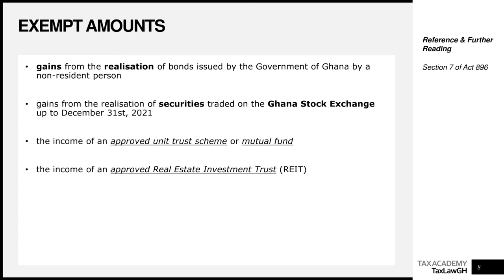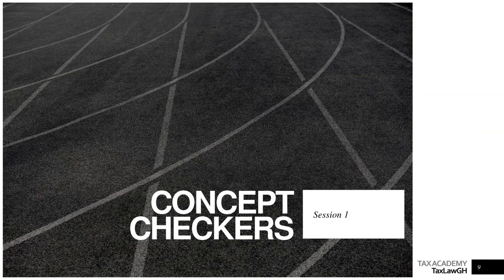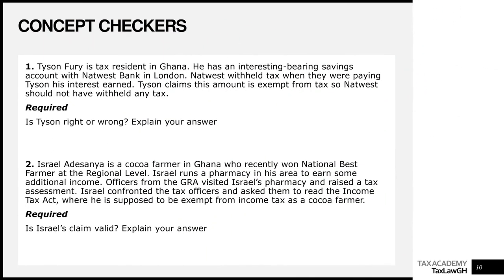Those are the exempt amounts in Section 7 of Act 896. Let's now take some concept checkers. Question one: Tyson Fury is tax resident in Ghana. He has an interest-bearing savings account with NatWest Bank in London. NatWest withheld tax when paying Tyson his interest earned. Tyson claims this amount is exempt from tax, so NatWest should not have withheld any tax. Is Tyson right or wrong — explain your answer.